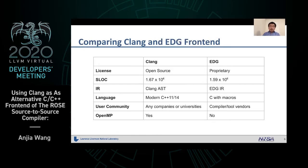This is the comparison between Clang and EDG frontend. Unlike EDG, Clang is open source and it can be used freely by any companies and universities. It also supports OpenMP very well.